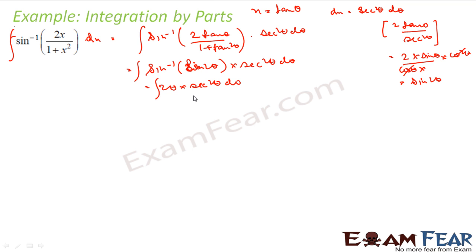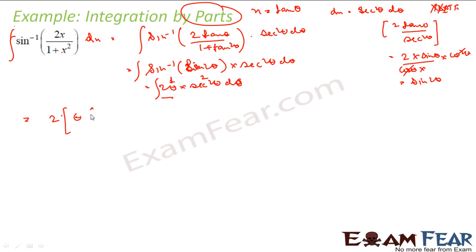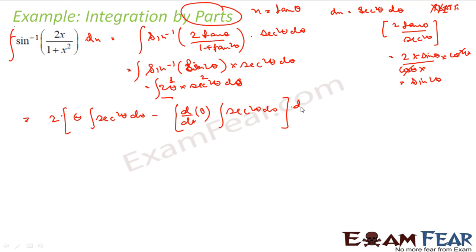This is a question of integration by parts. Using the ILATE rule: Inverse, Logarithmic, Algebraic, Trigonometric, Exponential — algebraic comes first, so 2θ is the first function and sec²θ is the second. Applying the formula: 2θ times the integral of sec²θ dθ minus the integral of [d/dθ(2θ) times ∫sec²θ dθ] dθ.